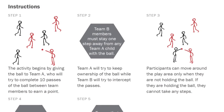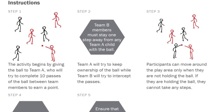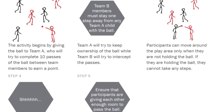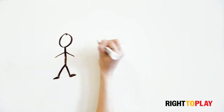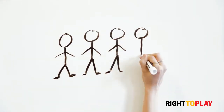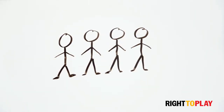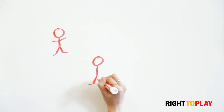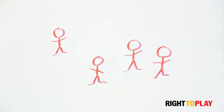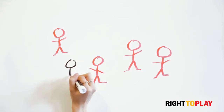Explain how to play the game by following the steps on the games sheet. Step 1: The activity begins by giving the ball to Team A, who will try to complete 10 passes of the ball between team members to earn a point.